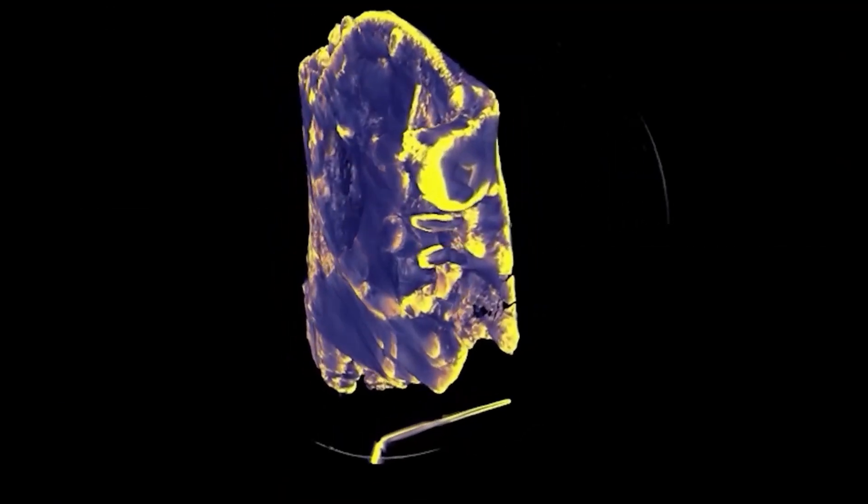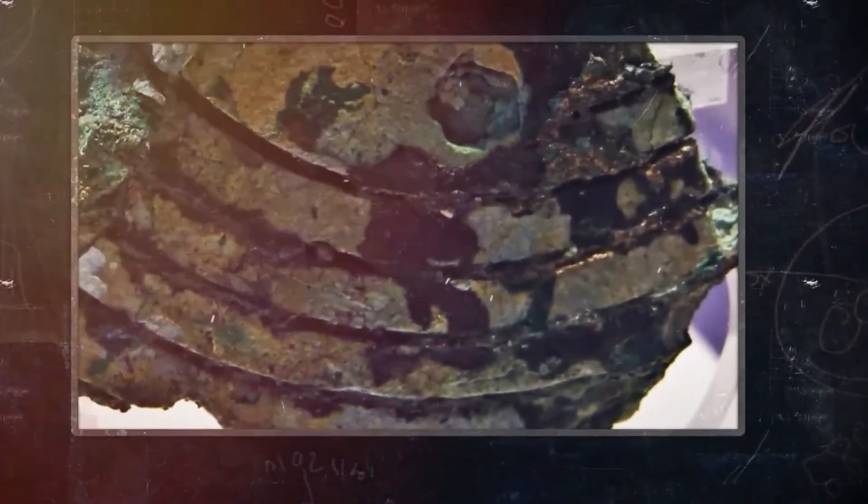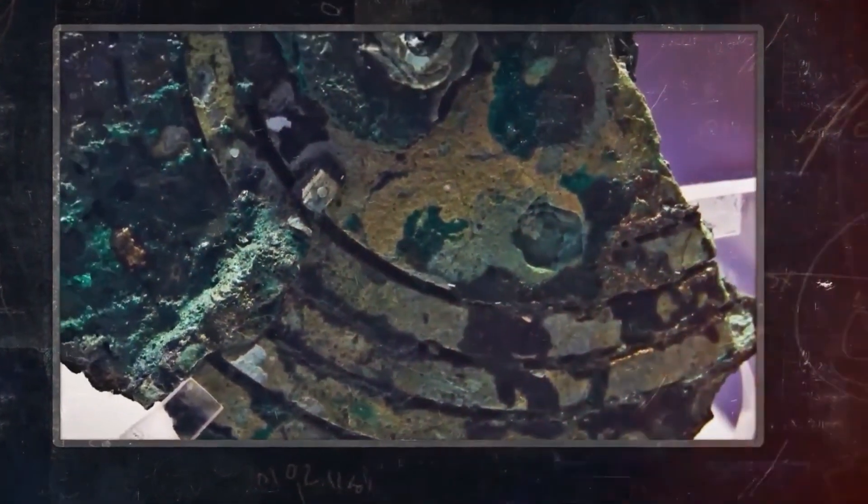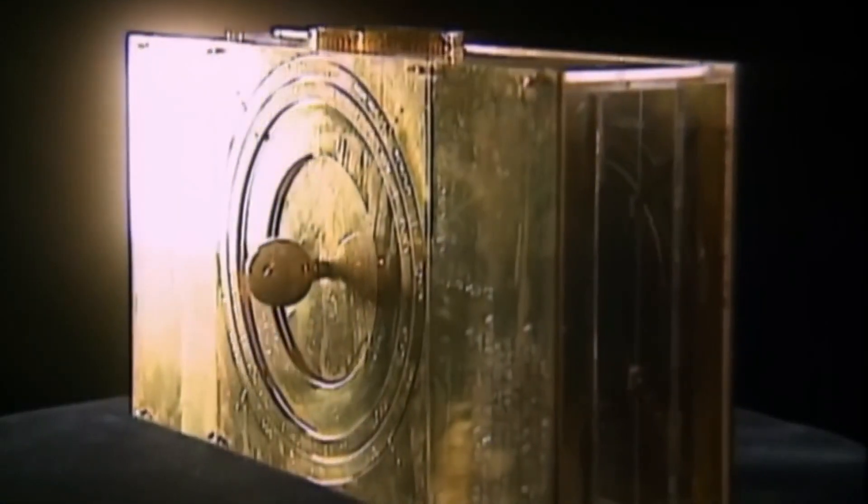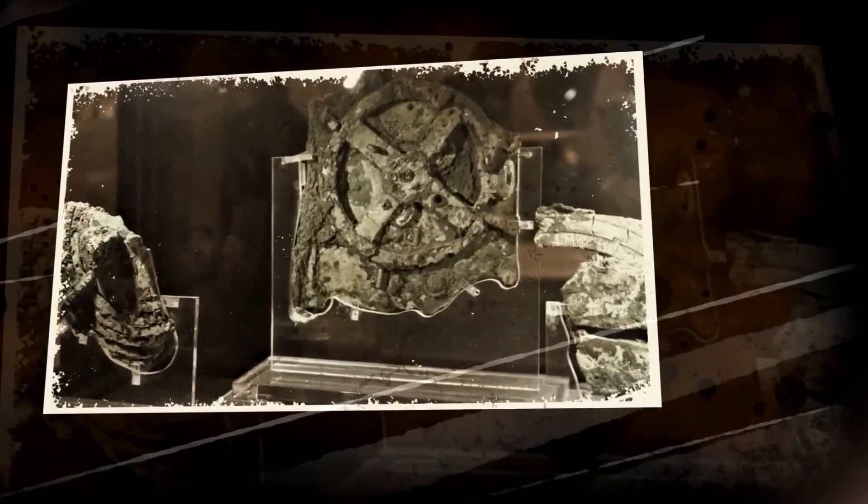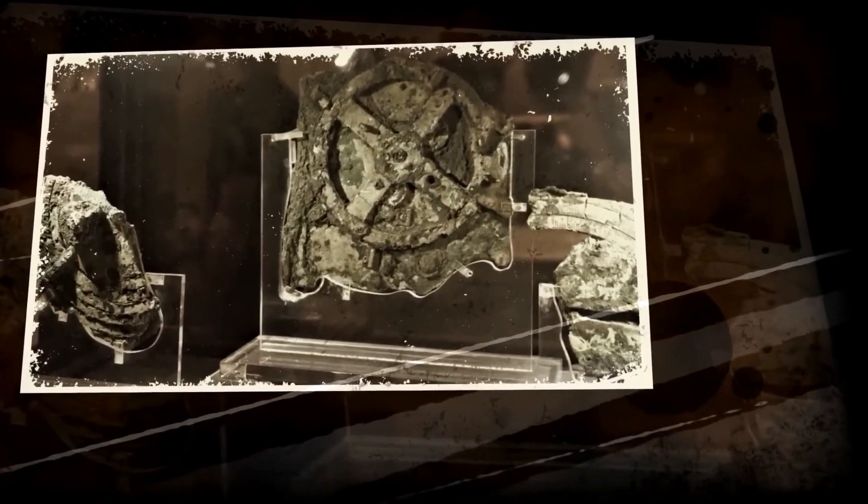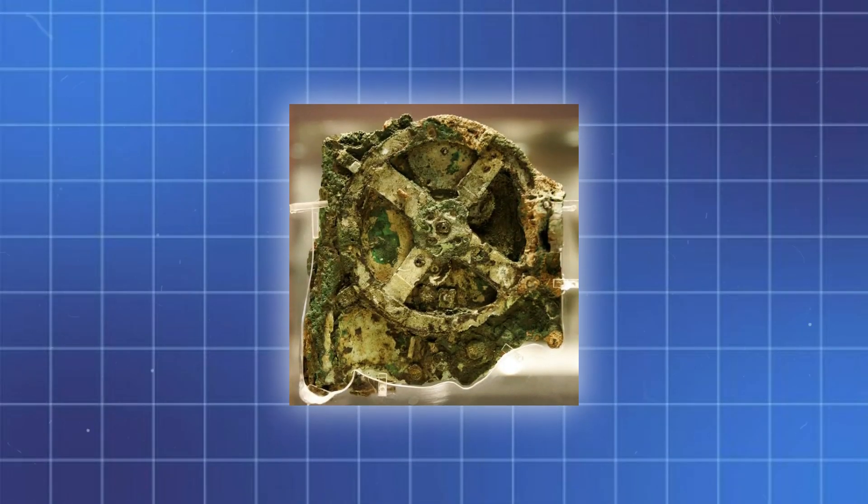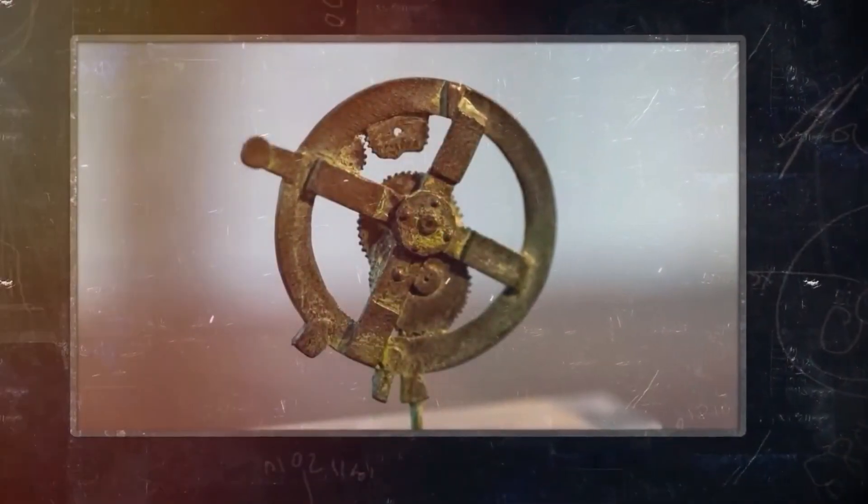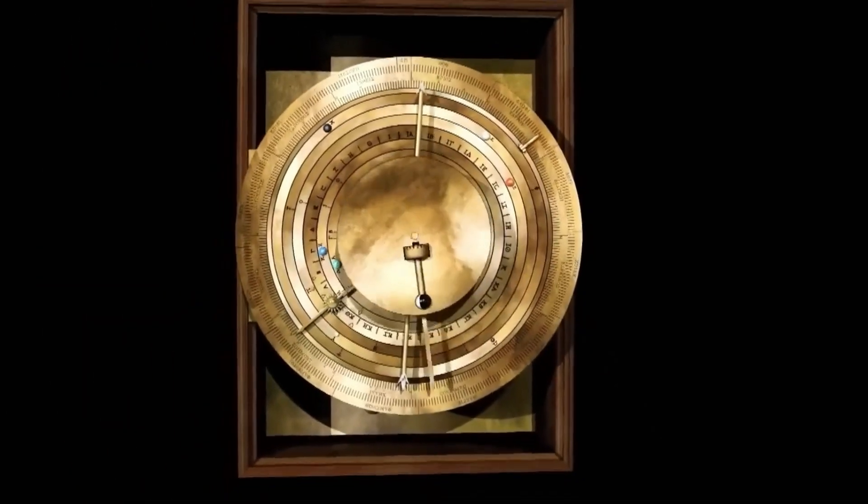The Calypic dial marked a 76-year cycle, refining the Metonic calculations. The Exeligmos dial extended eclipse predictions over 54 years. A fifth dial recorded the four-year cycle of athletic festivals, including the Olympic Games, with inscriptions naming events like the Isthmia and Nemea.